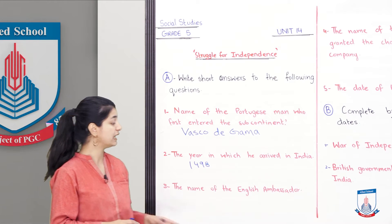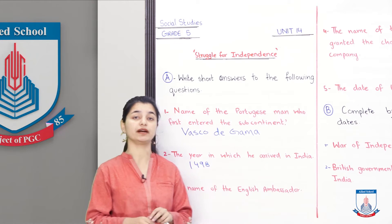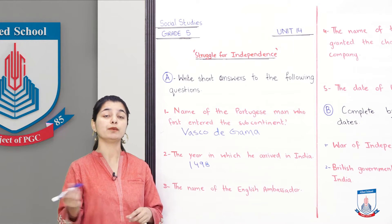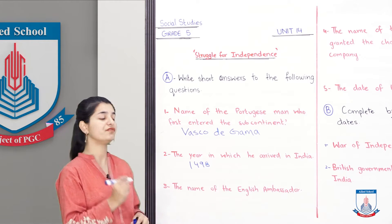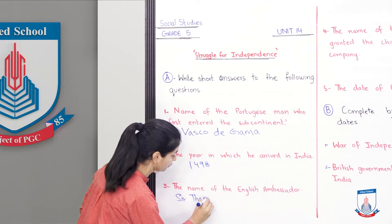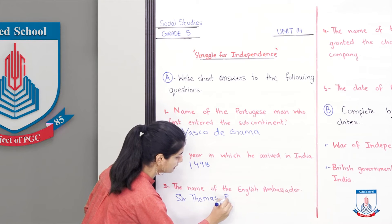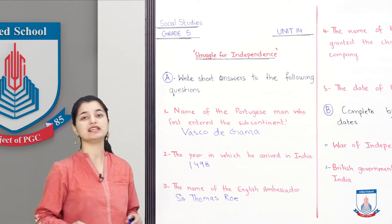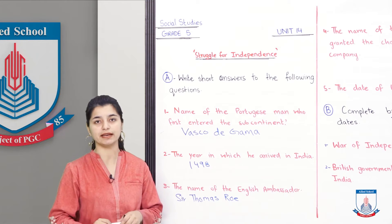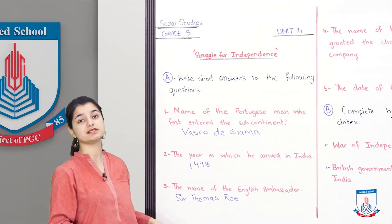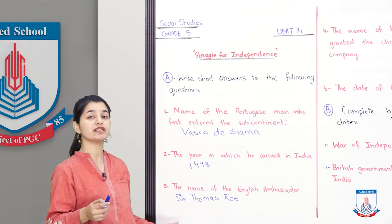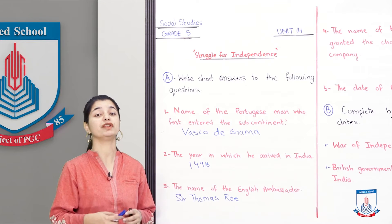Question number 3: the name of the English ambassador who came to Jahangir. Sir Thomas Rowe came to Jahangir as the British representative of the East India Company. Queen Elizabeth had sent him so that he could talk to Jahangir — the Mughals wanted to trade with the English. So he was the person who came to Jahangir; he was the English ambassador from England. You can mention his name here.